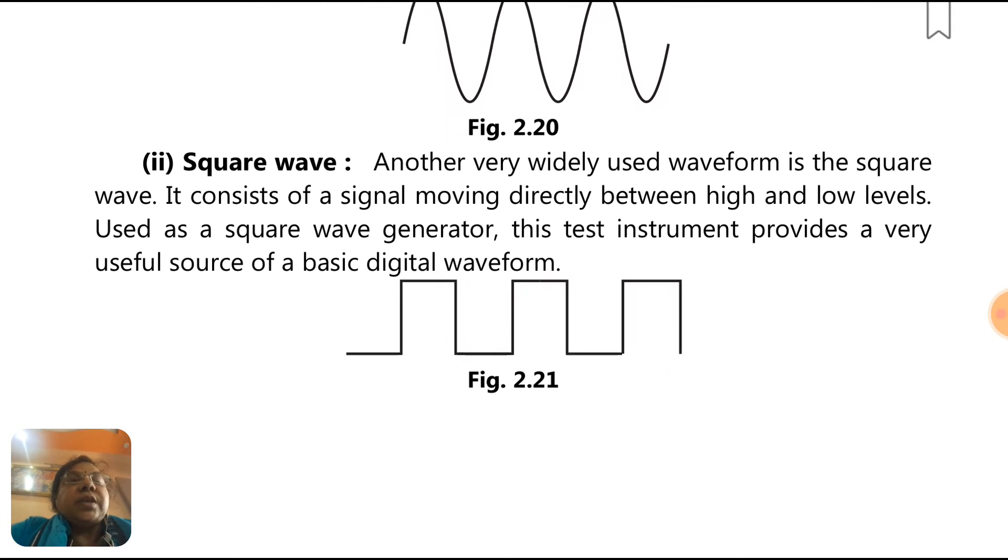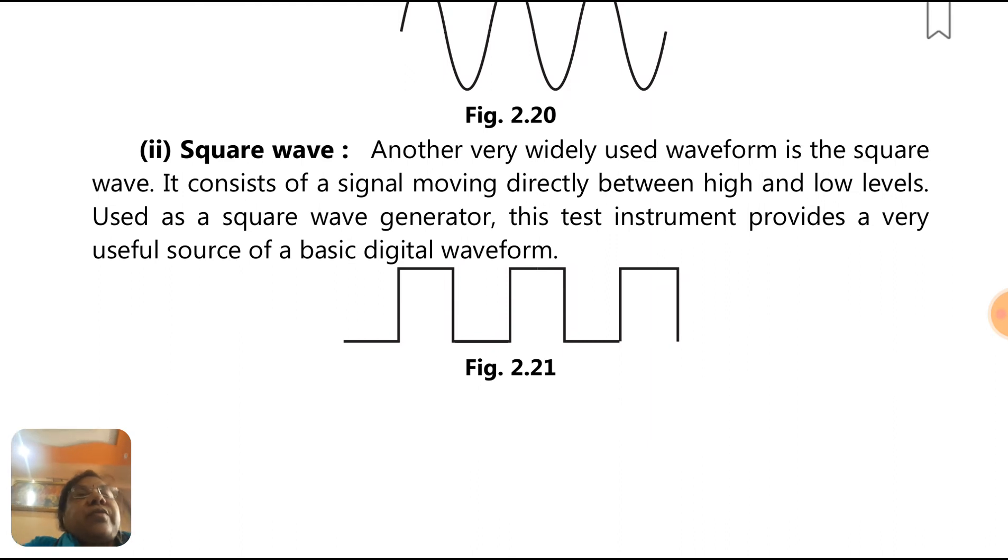Square wave: another very widely used waveform is the square wave. It consists of a signal moving directly between high and low levels. Used as a square wave generator, this test instrument provides a very useful source of basic digital waveforms.